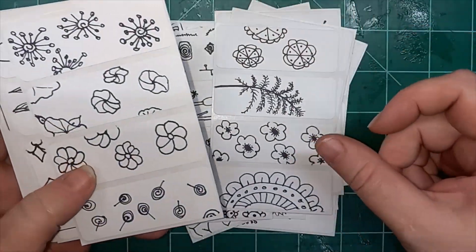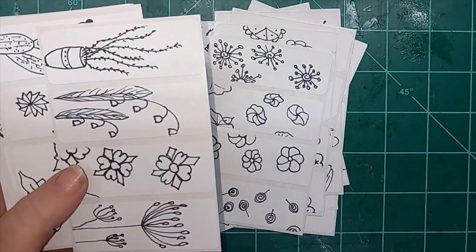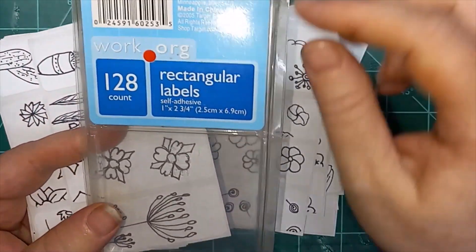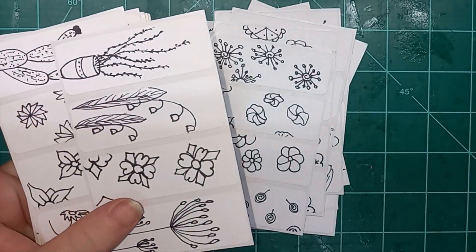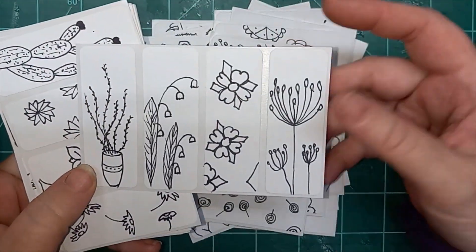Showing you how I did these flowers. And it's just one label each day. They are rectangular labels, self-adhesive, 1 inch by 2 and 3 quarter inch. This is just something I found at a secondhand store.